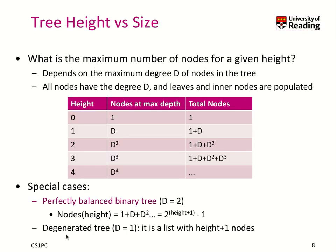There is also another special case, which is the fully degenerated tree. That means you have d equal to 1, which means it is in fact a list, where the height gives you at most height plus 1 nodes.